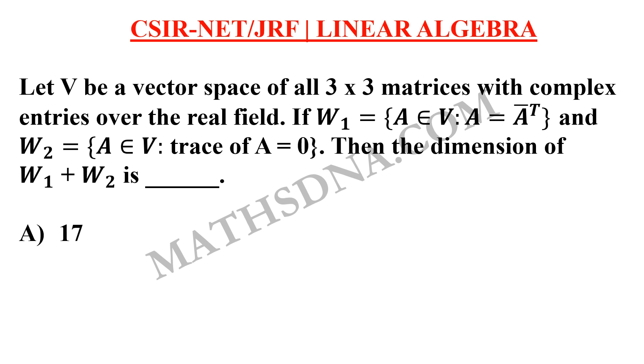Also, W1 and W2 are defined as W1 equals to A belongs to the vector space V such that A equals to A complement transpose and W2 equals to A belongs to V such that trace of A equals to 0.